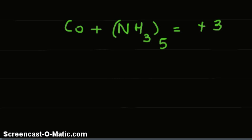We know that +3 comes from the charge on Co and NH3.